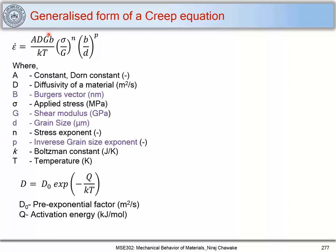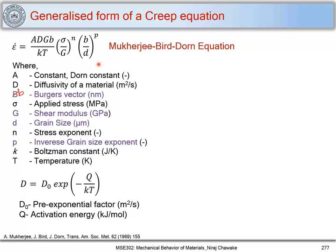The terms included are: A is a constant called the Dorn constant; D is the diffusivity of a material; b is the Burgers vector; sigma is the applied stress; G is shear modulus; d is grain size; n is the stress exponent; p is the inverse grain size exponent — d is in the denominator, which is why it is called the inverse grain size exponent. K is Boltzmann's constant and T is temperature. D can be written as D0 times exp(-Q/kT), where Q is activation energy and D0 is the pre-exponential factor.